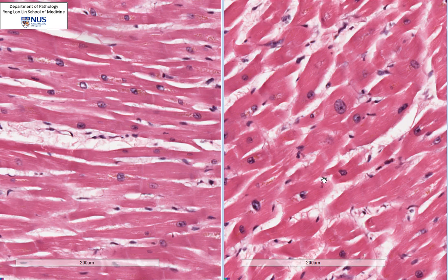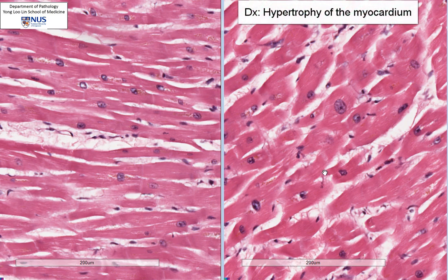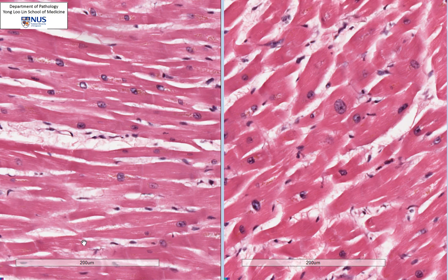So this type of cellular adaptation is called hypertrophy. As a result of this, you can imagine that the tissues grossly will also appear larger, and if you look at the left ventricle, it will appear much thicker.